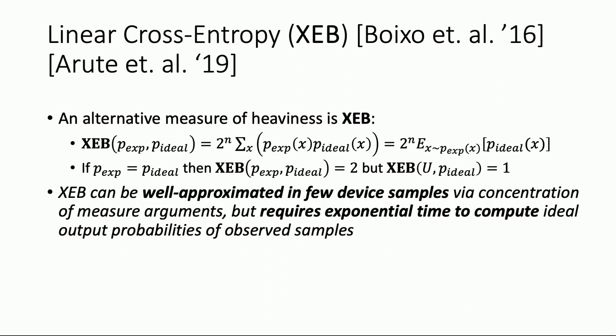Why do we care about this? Because it can be well approximated in few device samples via concentration of measure arguments — that's just sort of the law of large numbers. But it's still not an efficient score, and this is really important. It takes exponential time to compute ideal output probabilities of the observed samples.